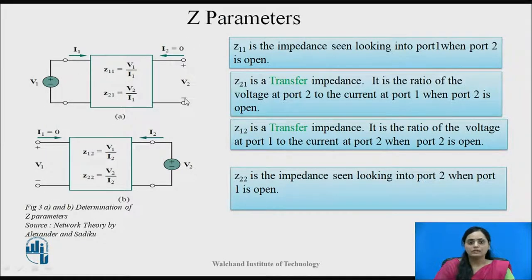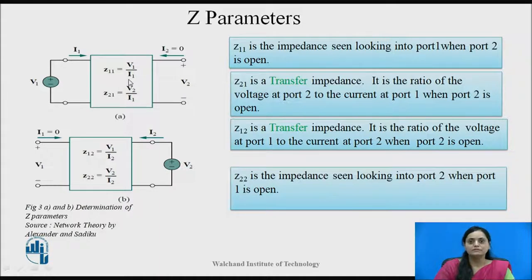Let us calculate Z11 and Z21. To find these, we make port 2 an open port, which means current I2 equals zero. Z11 is called the driving point impedance of port 1, while Z21 is called the transfer impedance — it is the ratio of voltage at port 2 to the current at port 1 when port 2 is kept open.